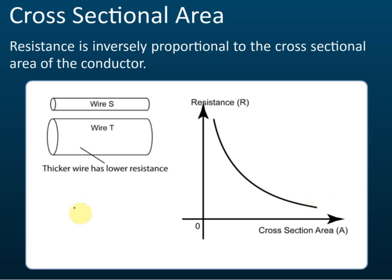Some students may wonder why a bigger cross-sectional area gives lower resistance. Let's look at this example. We have some electrons that want to pass through a resistor. If the cross-sectional area is small, it can only allow a small number of electrons to pass through at a given time. But if the cross-sectional area is big, it allows more electrons to pass through the resistor at a given time.